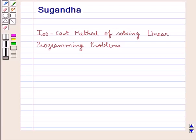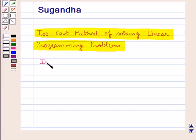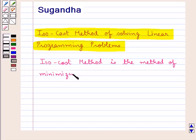Hello and welcome to the session. In this session we discuss the isocost method of solving linear programming problems. Isocost method is the method of minimizing the cost.